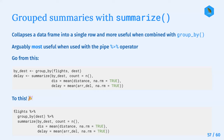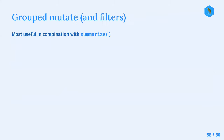You have your starting point - the flights dataset - and you feed it into functions. The first step is grouping by destination, and then the second step is summarizing and creating some new variables.